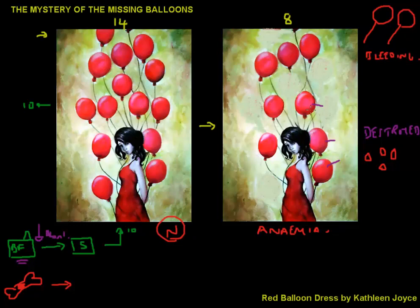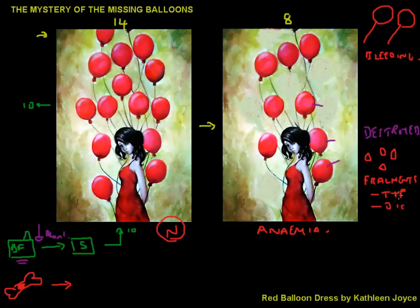Red blood cells can also be destroyed, and we can look for signs of that destruction. For instance, red cell fragments may be visible in the peripheral blood — literally little fragments — indicating fragmentation hemolysis, such as in TTP (thrombotic thrombocytopenic purpura), DIC (diffuse intravascular coagulation), or damage from heart valves, among many other causes.